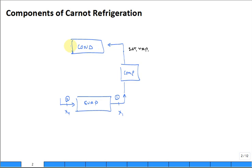What comes out of the condenser typically is going to be completely saturated liquid, but for the Carnot it is saturated liquid.